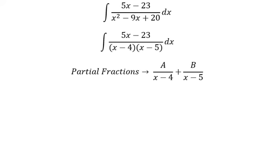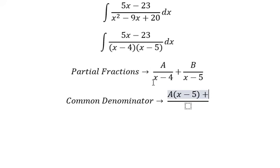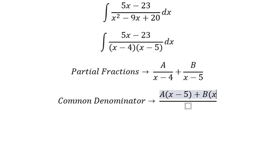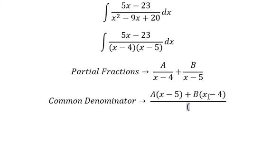The next one we need to do common denominator. That means this one will multiply with x minus 5 and this one multiply with x minus 4, so we get x minus 4 times x minus 5 here.